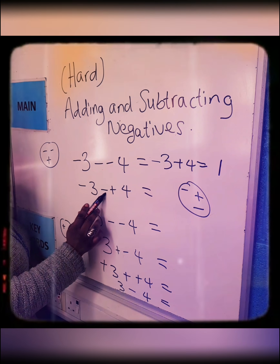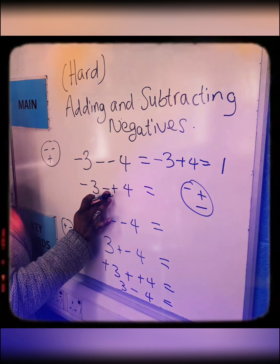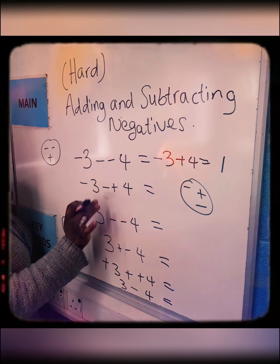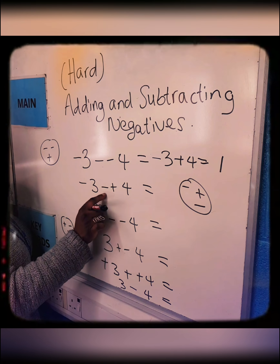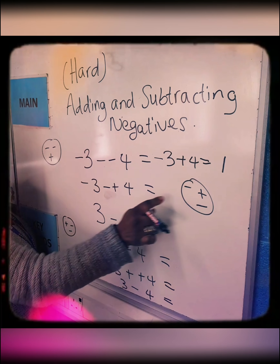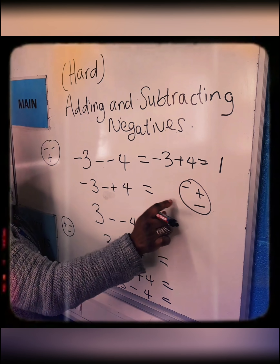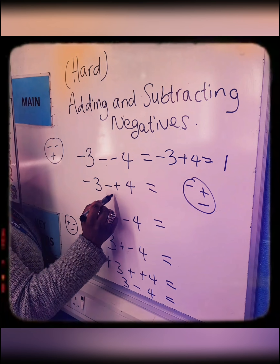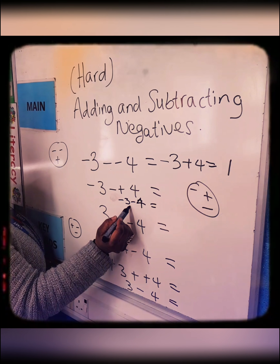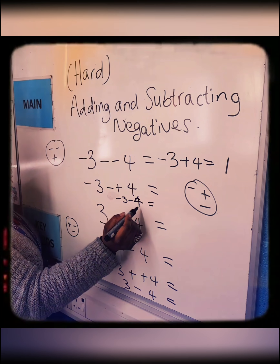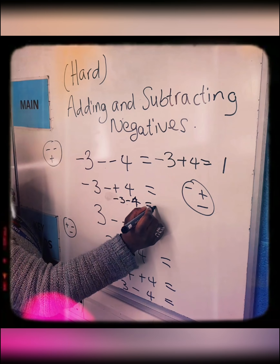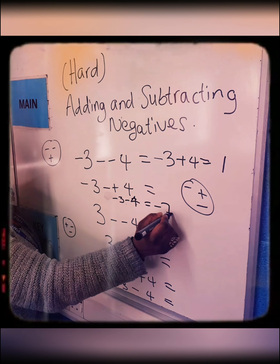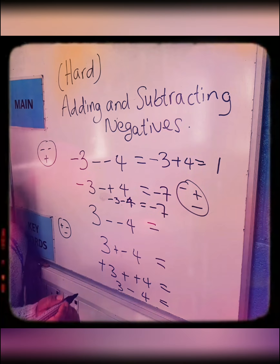Here you've got two signs next to each other, which shouldn't be happening in mathematics. Because they are different signs, it becomes a negative. So this becomes negative 3, negative 4. Now you're owing 3 pounds and you're owing 4 pounds — in total you're owing 7. Because you're owing, it becomes negative 7, and that's the answer.